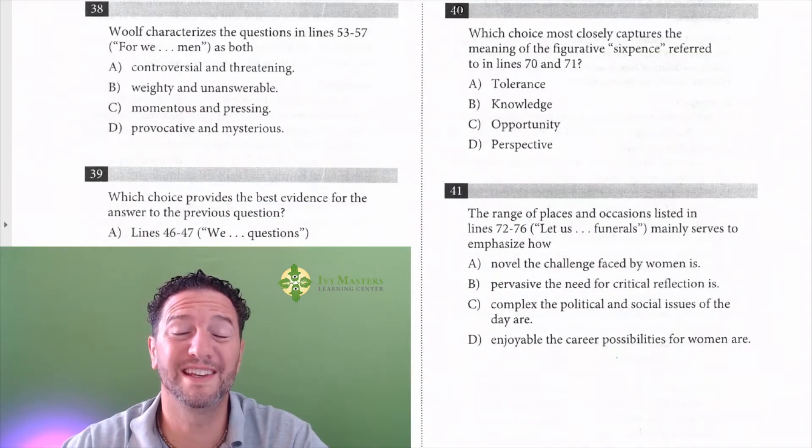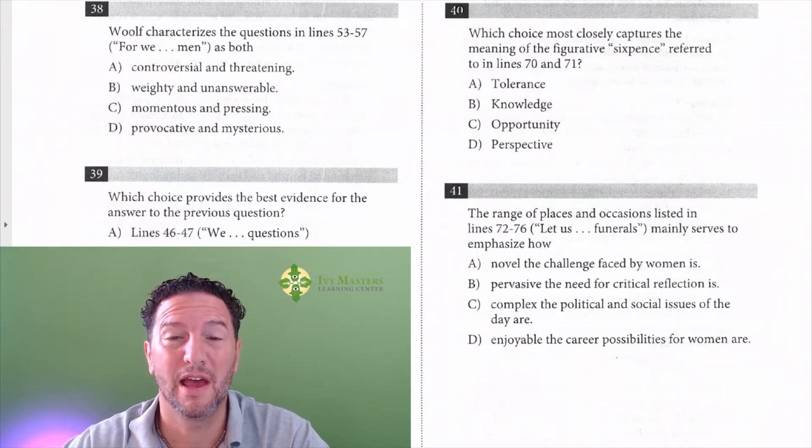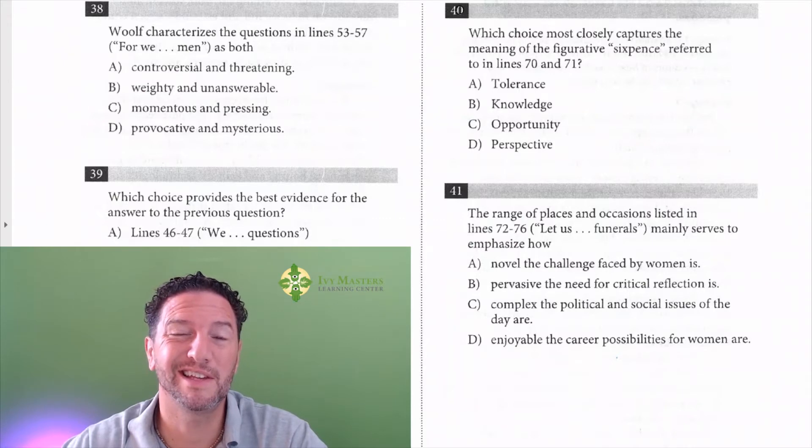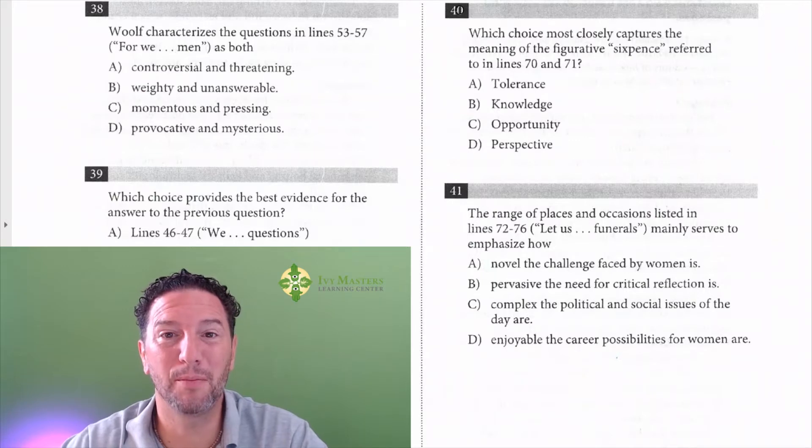When you're driving, peripheral vision is super important. How else can you see what's coming at you from the left or from the right? SAT reading could be like that. So they give you a line reference. You've got to see on the periphery. That is, you've got to read before and after to see what might be there.